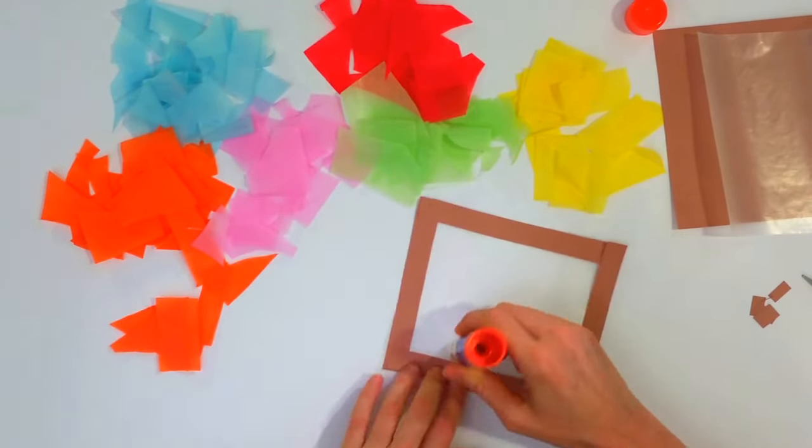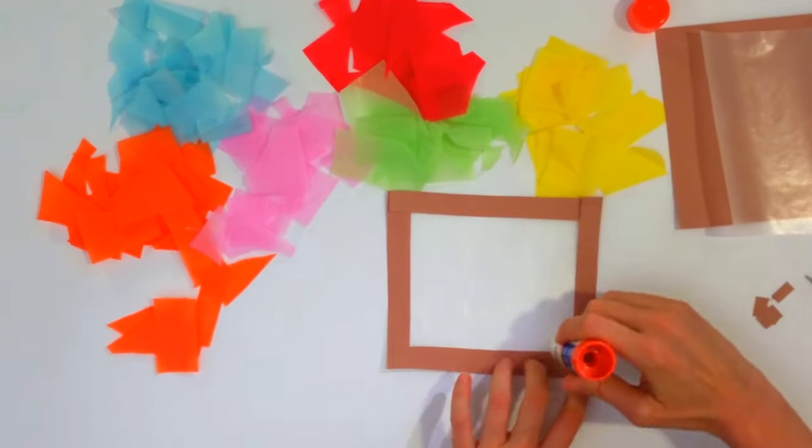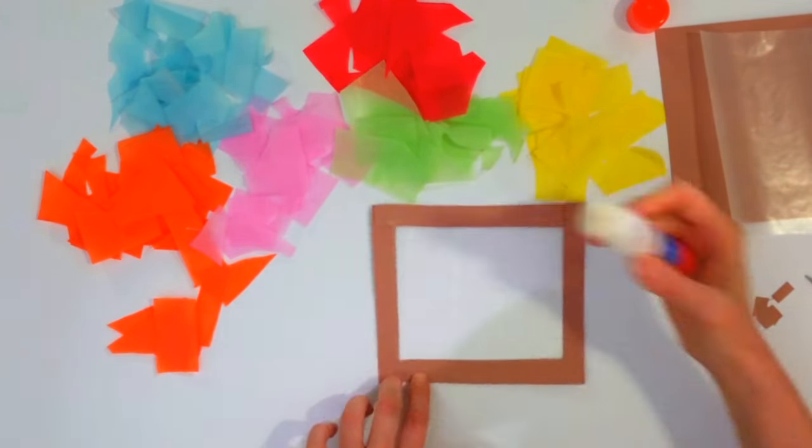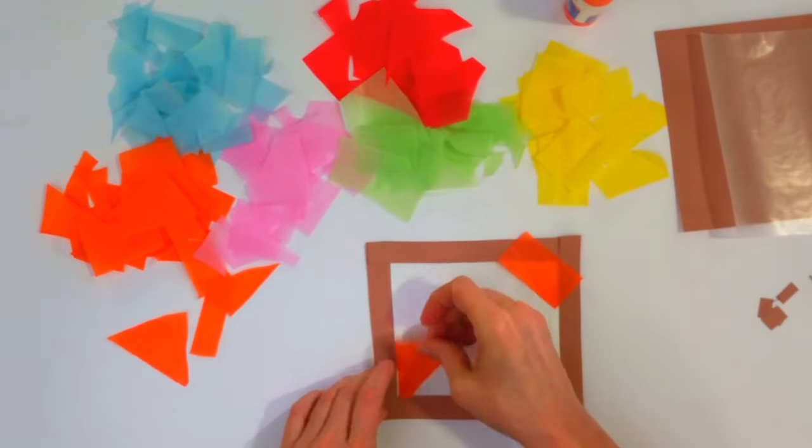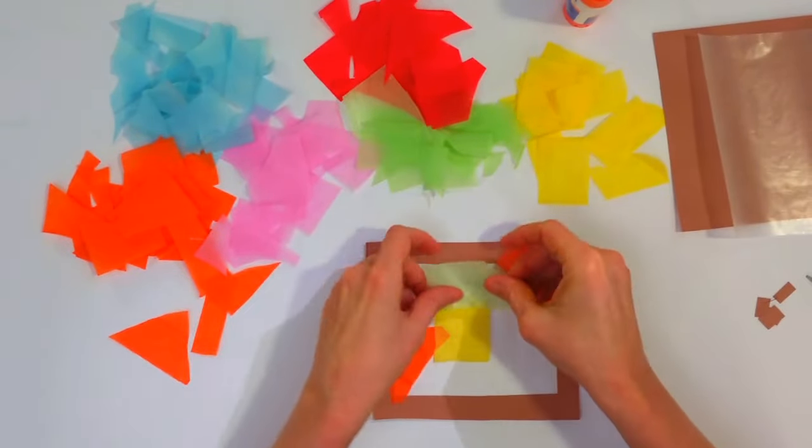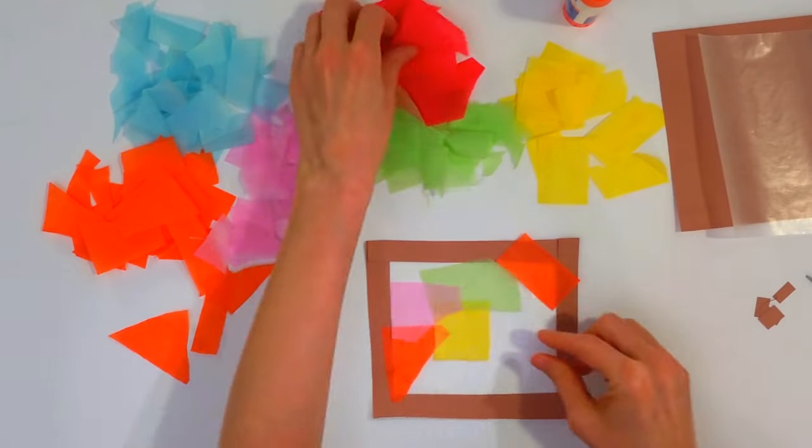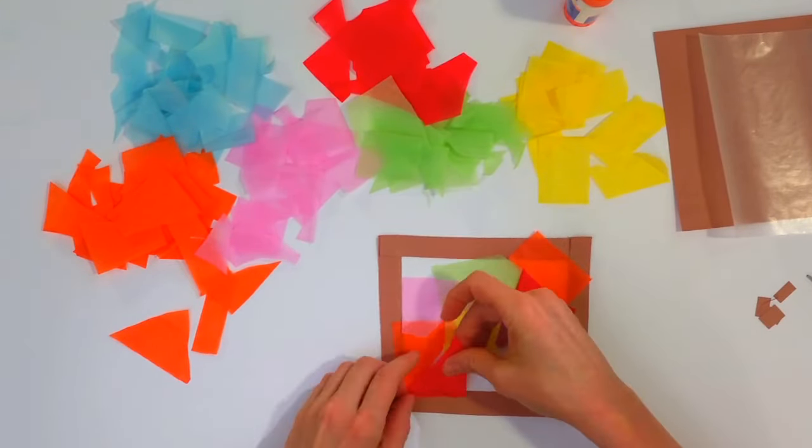And next you'll apply glue all the way across the middle. And then you want to start adding the tissue paper, overlapping colors, so it starts to look like stained glass.